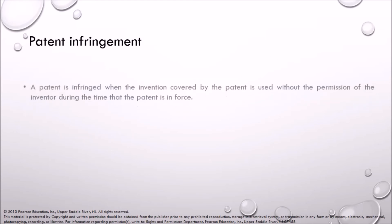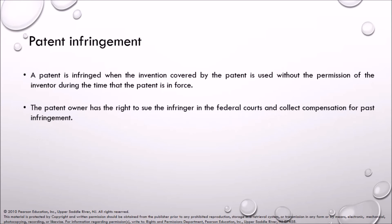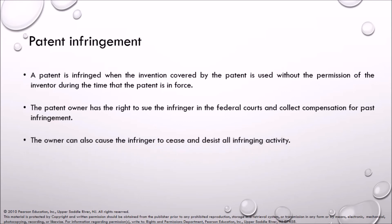Patent infringement. A patent is infringed when the invention covered by the patent is used without the permission of the inventor during the time that the patent is in force. The patent owner has the right to sue the infringer in federal courts and collect compensation for past infringement. The owner can also cause the infringer to cease and desist all infringing activity.